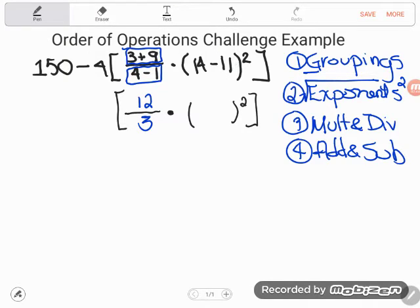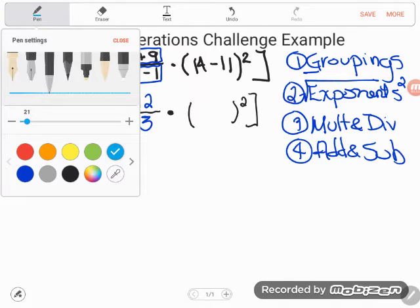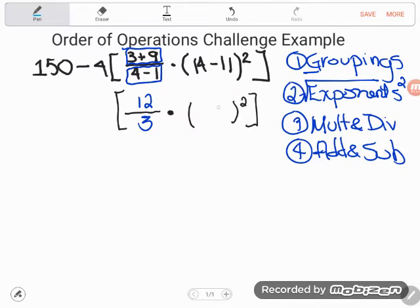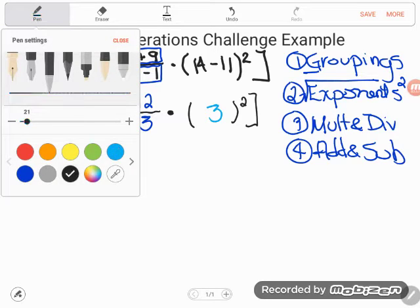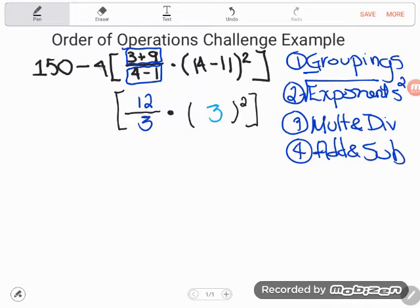But I am going to do this other grouping as well. 14 minus 11 is also an inner grouping, and it doesn't share any numbers with the other inner grouping, so I can do it. So 14 minus 11 is three. Again, be a very, very good secretary. Don't lose anything from above. So I dealt with everything in the brackets, but I haven't dropped the four, the minus, and the 150.